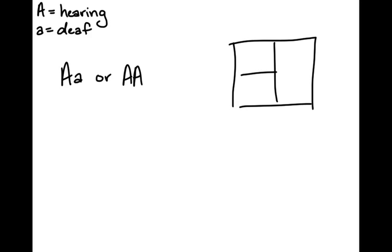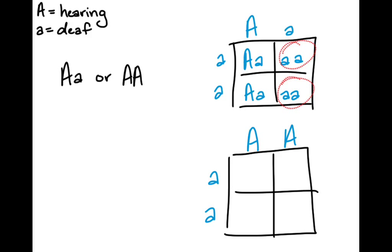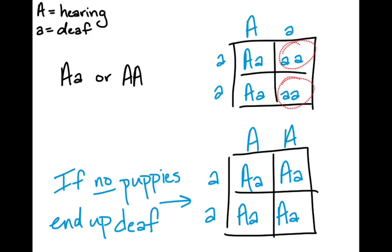So working out the first cross here, you can see that with the heterozygous, you would have some deaf puppies, but with the pure breeding or homozygous dominant, all your puppies should be hearing. And so if there are no puppies that end up deaf, you're looking at a homozygous dominant individual and you would want to breed that individual.